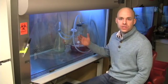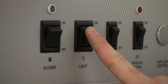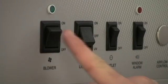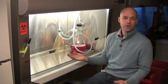So when you show up to a hood many times the sash will be down and the UV light will be on. The first thing you need to do is turn off the UV light and turn on the blower. At this point you can raise the sash and you should hear the blower turn on.